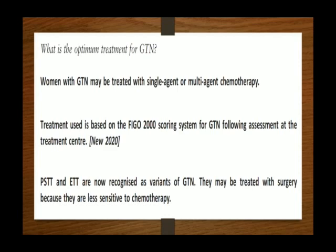What is the optimum treatment for GTN? Women with GTN may be treated with single or multi-agent chemotherapy. Treatment is based on the FIGO 2000 scoring system for GTN following assessment at a treatment center. Placental site trophoblastic tumors and epithelioid trophoblastic tumors are now recognized as variants of GTN and may be treated with surgery because they are less sensitive to chemotherapy.